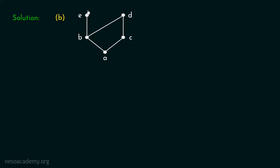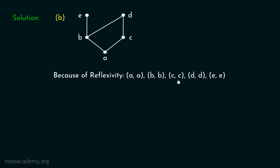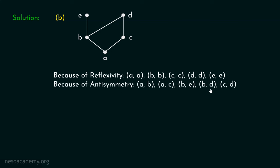Now let's consider the second Hess diagram, which has five vertices: A, B, C, D, E. Because of reflexivity, (A,A), (B,B), (C,C), (D,D), and (E,E) must be in the partial order. Because of anti-symmetry, we include edges: (A,B), (A,C), (B,E), (B,D), and (C,D).